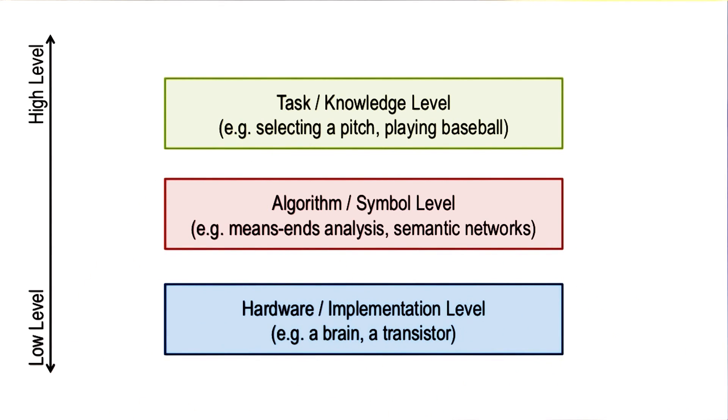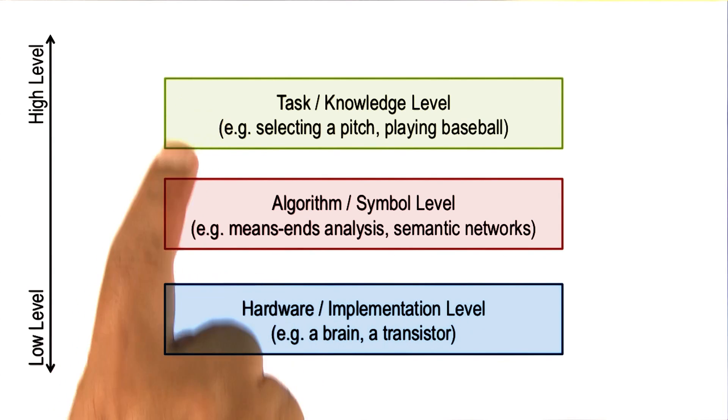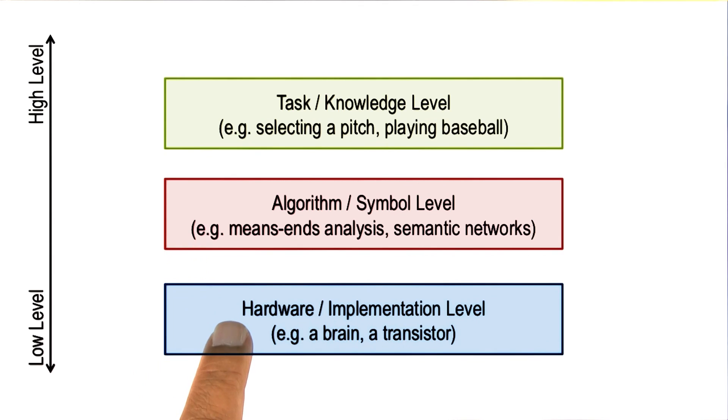Now, in the history of AI, David Marr talked about three levels. The level of tasks, which he called the computational theory. The level of algorithms and the level of implementation.